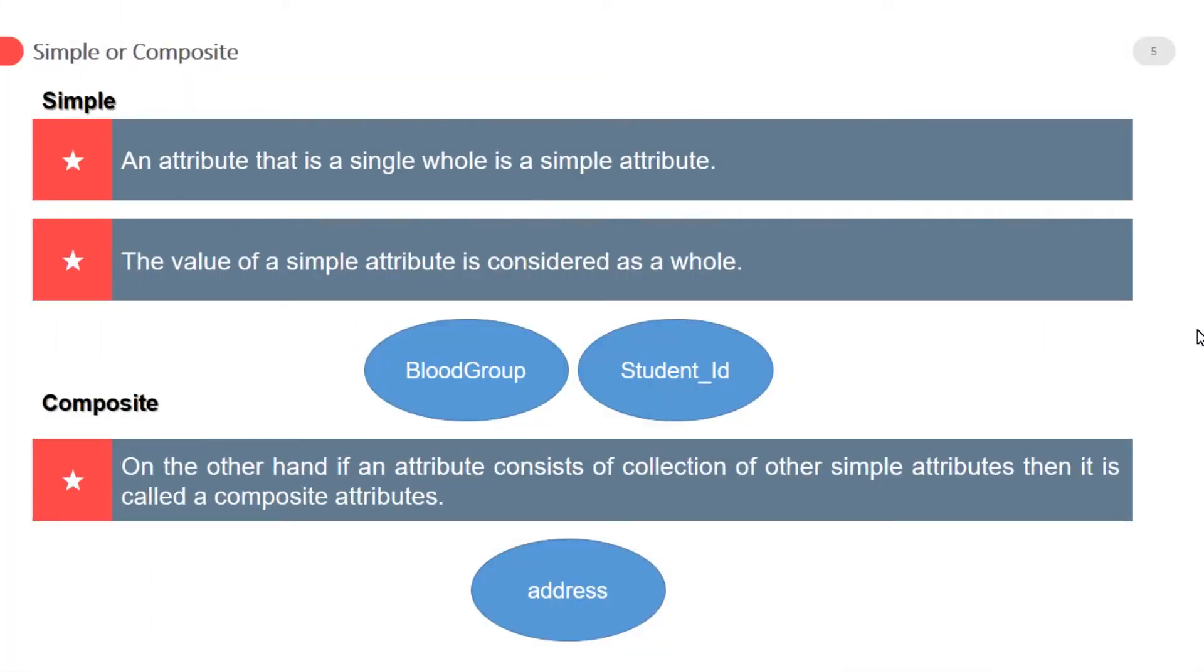Simple or composite attribute. Simple attribute: an attribute that is a single whole is a simple attribute. This is a very important point. The value of a simple attribute is considered as a whole. Attributes like student ID and blood group of an entity type student are simple attributes.